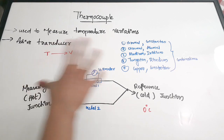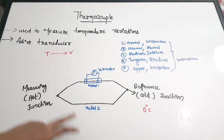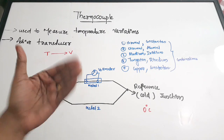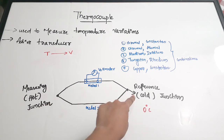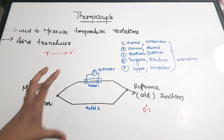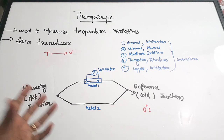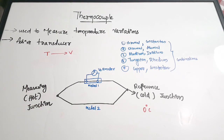Now let us have a look at the structure of a thermocouple. There is metal 1 and metal 2 — these are two dissimilar metals — and these two dissimilar metals are joined to form two junctions. This is junction 1 and this is junction 2. Junction 1 is the hot junction, which is the measuring junction where we connect the device or source for measuring temperature.